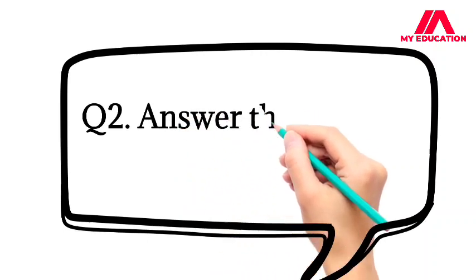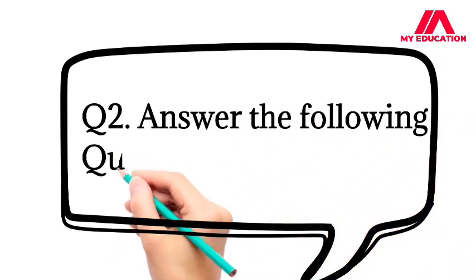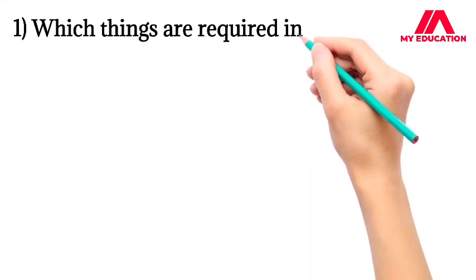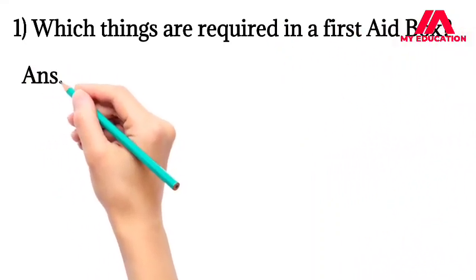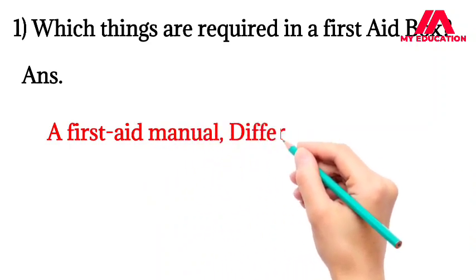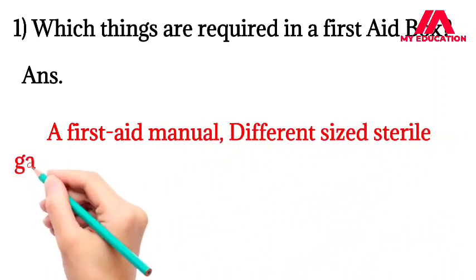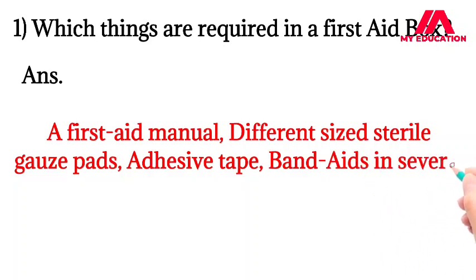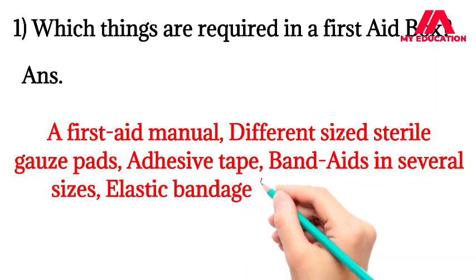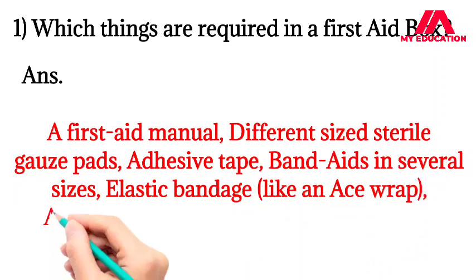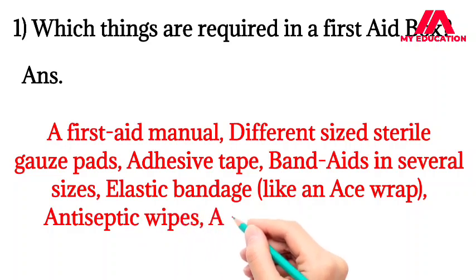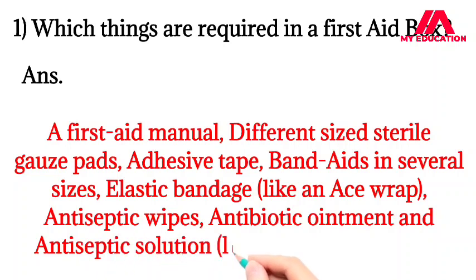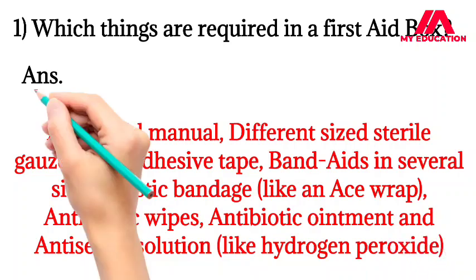Question Second: Answer the following questions. First, which things are required in a first aid box? Answer: A first aid manual, different size sterile gauze pads, adhesive tape, band-aids in several sizes, elastic bandage like an ace-wrap, antiseptic wipes, antibiotic ointment, and antiseptic solution like hydrogen peroxide.